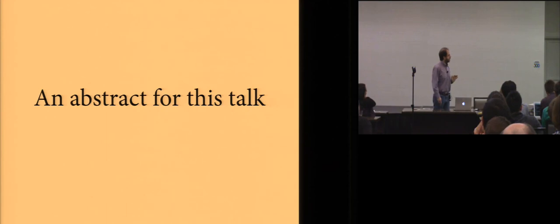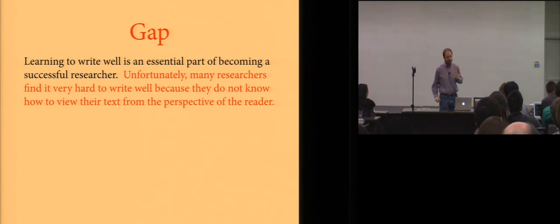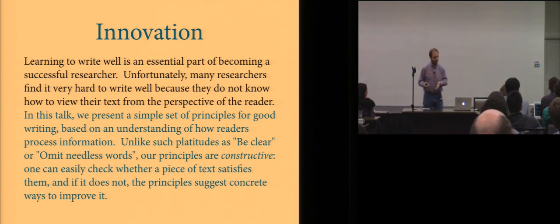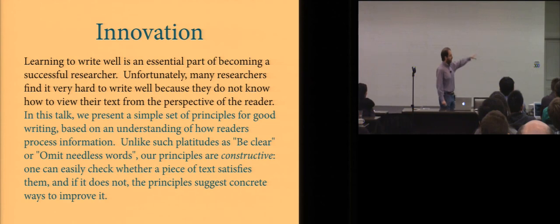So, I'm just going to show you a positive example in this case, in the form of an abstract for this talk. So, we could start with the context. Learning to write well is an essential part of becoming a successful researcher. Then, the gap. Unfortunately, many researchers find it very hard to write well because they do not know how to view their paper from the perspective of the reader. Now, the innovation comes in to say what we're doing. In this talk, we present a simple set of principles for good writing based on an understanding of how readers process information. Unlike such platitudes as be clear or omit needless words, our principles are constructive. One can easily check whether a piece of text satisfies them. And if it doesn't, then the principles suggest concrete ways to improve it.